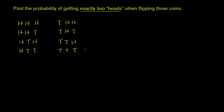These are all the different ways that I could flip three coins. You can say this is the first flip, the second flip, and the third flip. So this right over here is the sample space. There are eight possible outcomes.